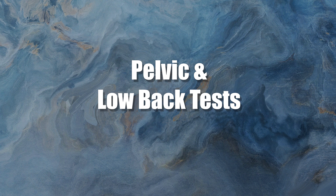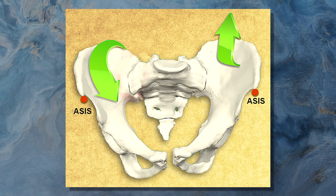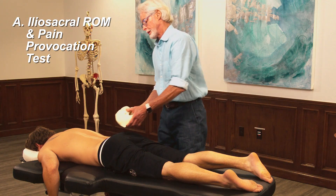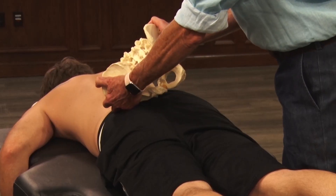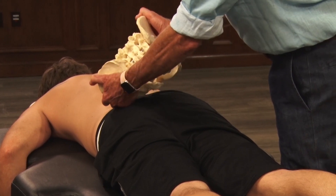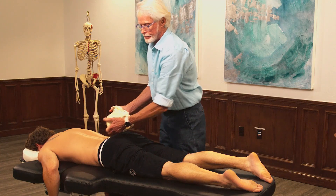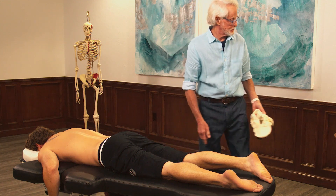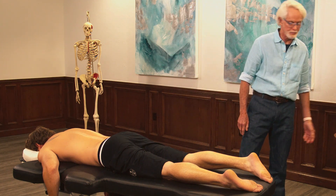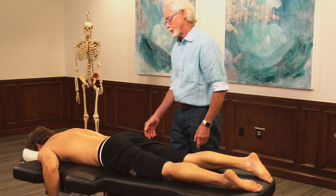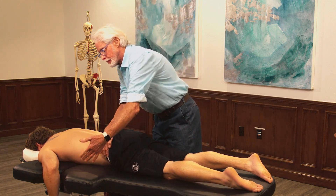Pelvic and low back tests have moderate intertester reliability when combined with a sacral thrust test. We're looking at the ASIS here, trying to see what kind of rotation they're having in their pelvis. We're checking for iliosacral rotation, range of motion, and restrictions. This has to do with cross-pattern gait, so we want to make sure that there is equal rotation on either side of the pelvis.